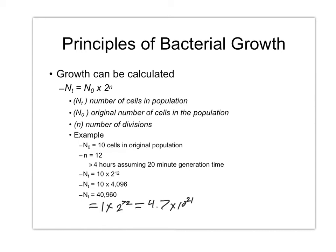Obviously this doesn't ever actually happen, because cells can't grow under ideal conditions without limit. Several hours in, it will have eaten all of its available food and then stop growing. But if it were growing without limit, doubling every 20 minutes, we're talking about a huge mass of cells. On the other hand, if you start with one Mycobacterium tuberculosis, 24 hours later you will have two of them.